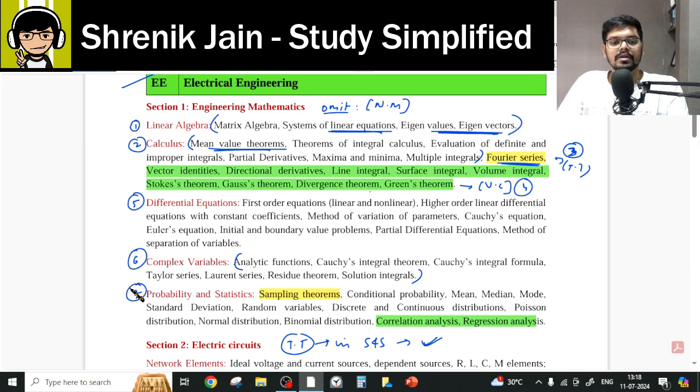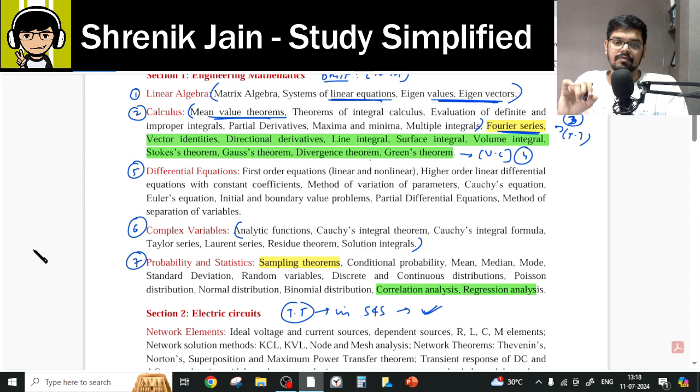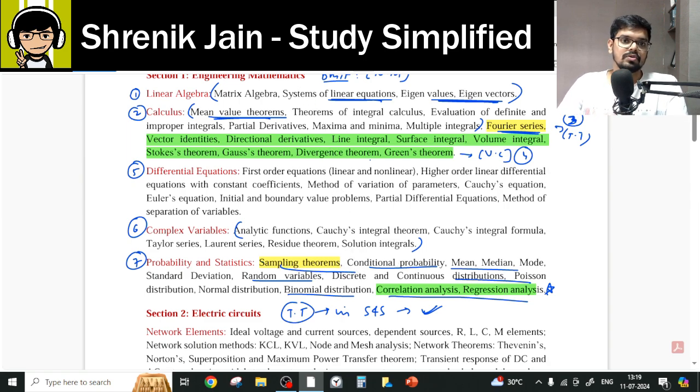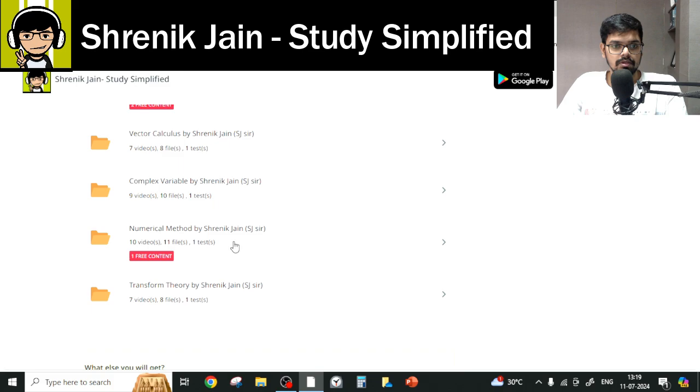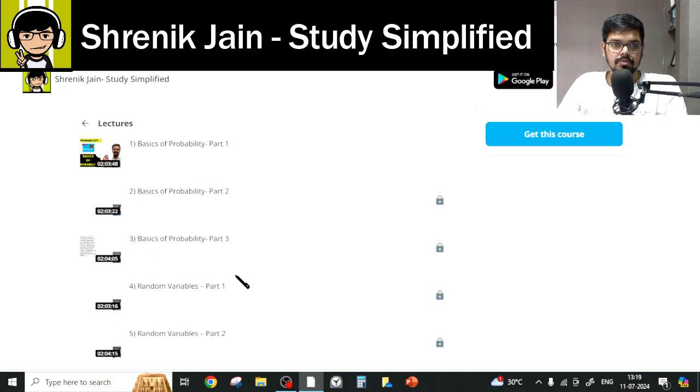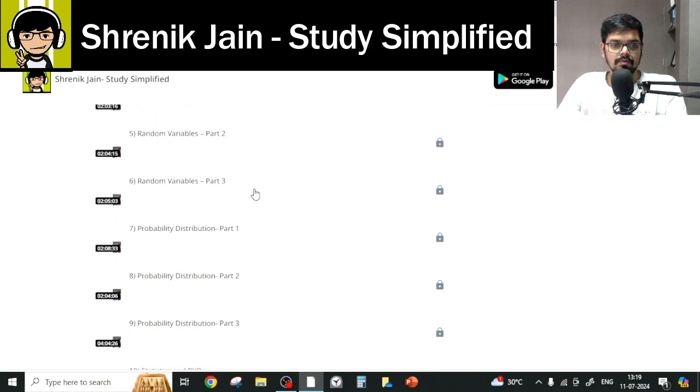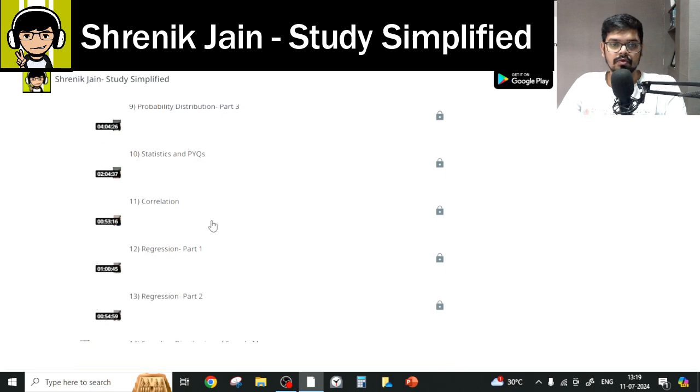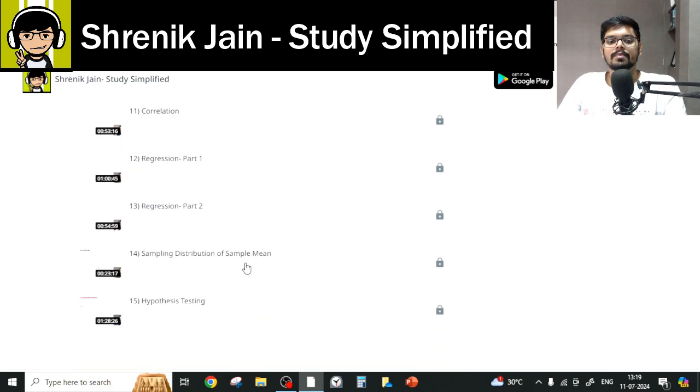Now comes the seventh chapter probability and statistics. Now here you do not have to study everything. Why so? Because the basics of probability, statistics, random variable and probability distribution you have to study. Then you should also study correlation and regression which is not part of every branch but your branch has this part. You have to study. Then sampling theorem. So there is one lecture which you should watch because it will help you to solve the sampling question. So let me go to the probability and then we have lectures. So basics of probability, everything, random variable, everything, probability distribution, everything, statistics, everything, correlation regression, yes. And then sampling distribution of sample in this part.